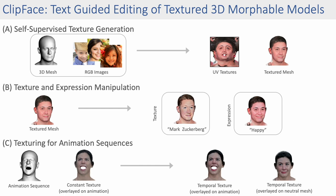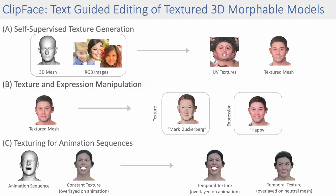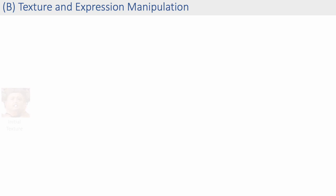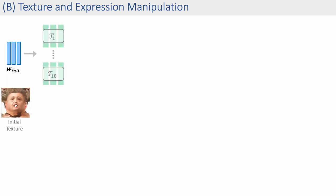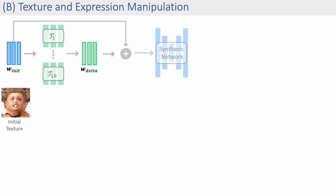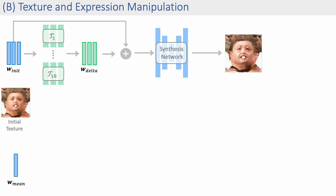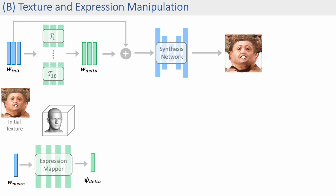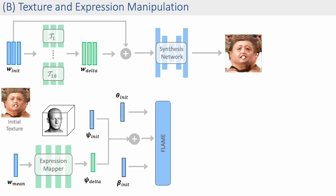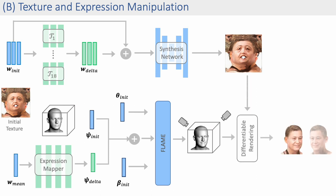We then perform text-guided texture and expression manipulation by learning mappings in the space of our trained texture model and the expression space of the morphable model. For an initial texture map, we pass its latent code to the texture mapper to generate a texture offset, which should move the texture to match the given text prompt. To manipulate the expression, we take the mean latent code and pass it to an expression mapper to generate an expression offset. The texture and expression mappers are learned through differentiable rendering, supervised by a CLIP loss against the text prompt.